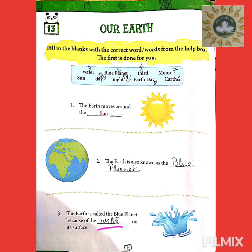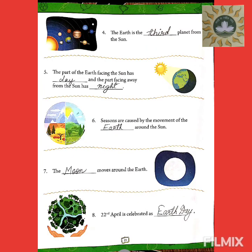Number 3: the earth is called the blue planet because of the water on its surface. Page number 25. Number 4: the earth is the third planet from the sun. Number 5: the part of the earth facing the sun has day, and the part facing away from the sun has night.